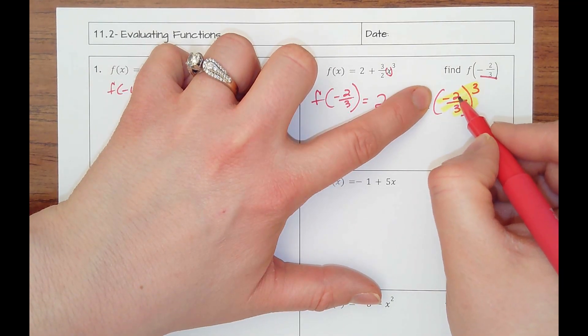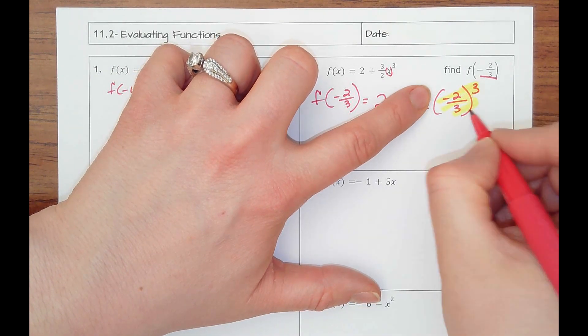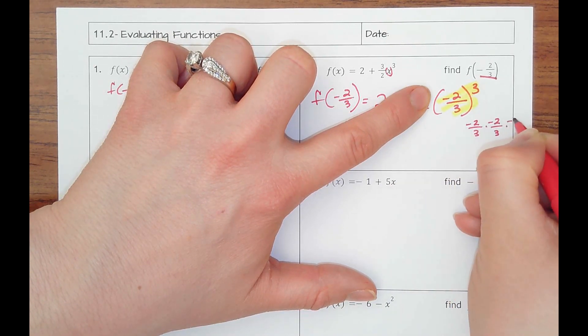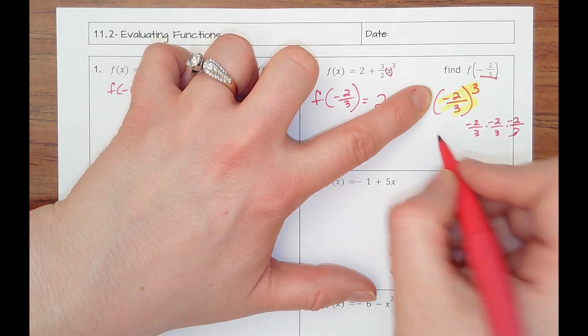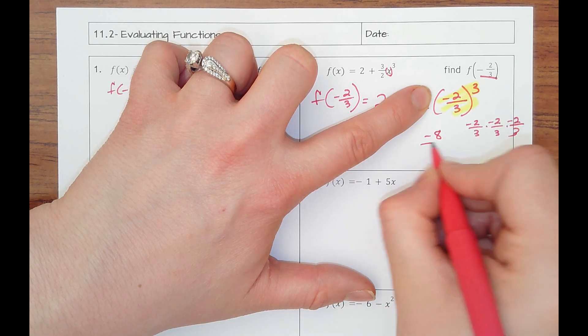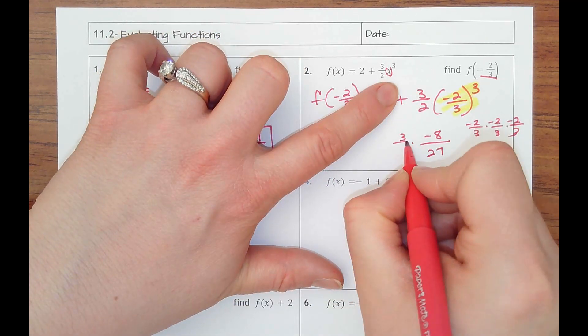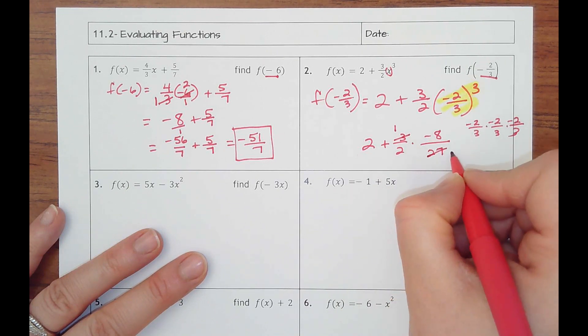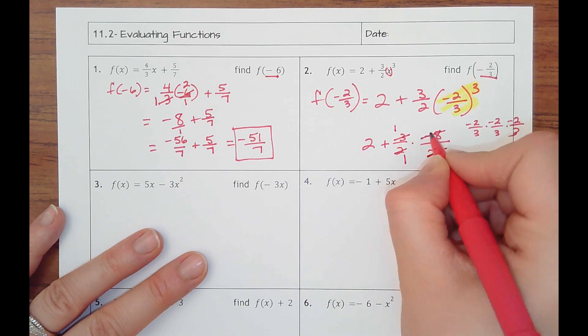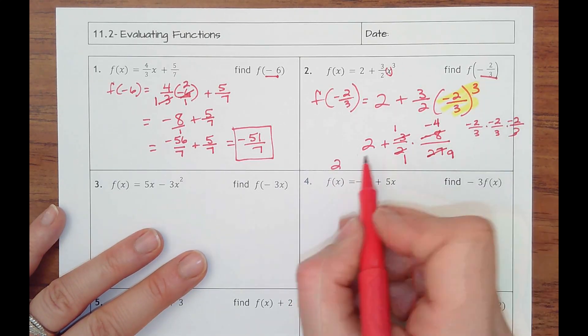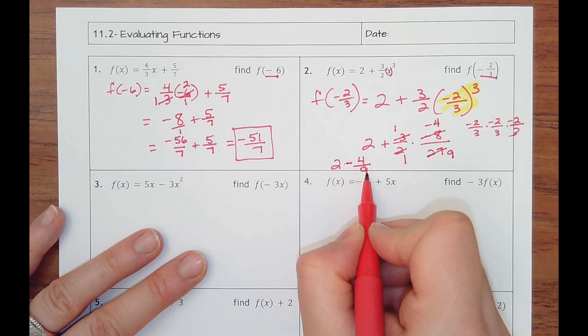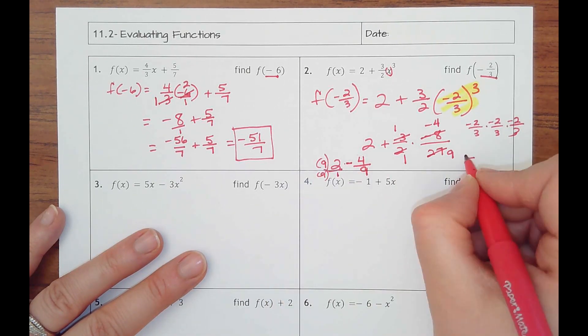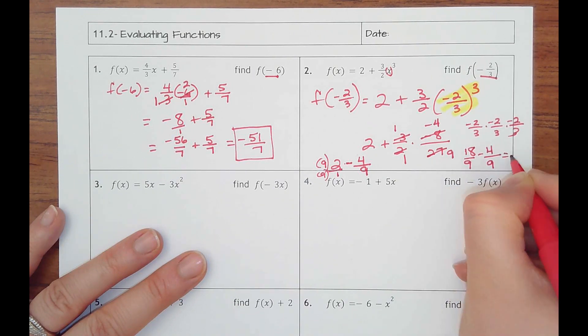When you are multiplying this, this is really just going to be a negative two times a negative two times a negative two straight across and three times three times three. It's just this fraction times itself three times. So really, I just think negative two to the third power would be a negative eight. Three to the third power is 27 times three halves. And that's plus two. So I would cross simplify. 27 divided by three is nine. Divide out of two, be a negative four. So it'd be two plus negative or two minus four ninths. And then two over one, if I made that something over nine, I would have to multiply the two by nine to be 18 ninths minus four ninths is 14 ninths.